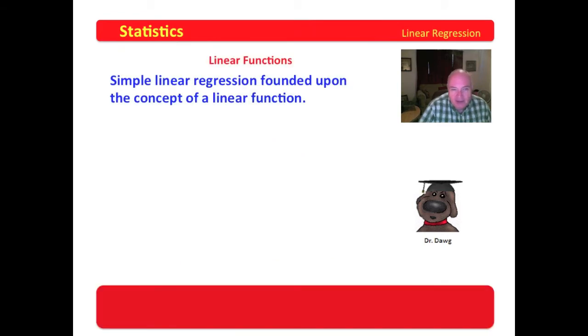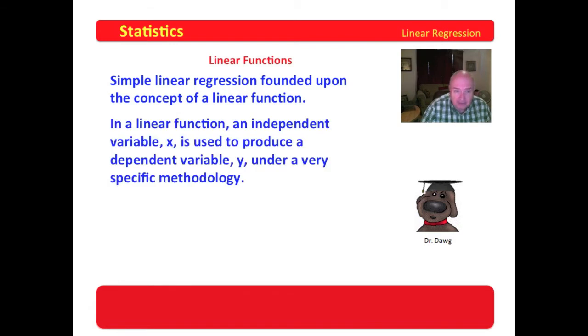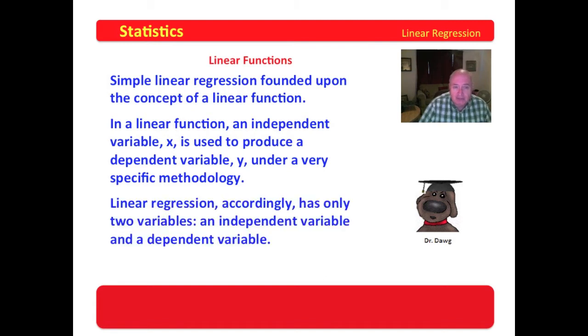Simple linear regression is founded upon the concept of a linear function. Linear regression is about drawing a line through a set of data points to find the line of best fit. In a linear function, an independent variable x is used to produce a dependent variable y under a very specific methodology. That methodology requires, first of all, to be a function that each x goes to only one y value. No x can be in two places at the same time. x goes to one unique y. That makes it a function.